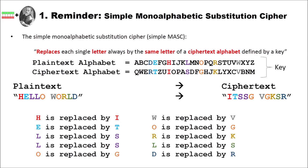What is the simple monoalphabetic substitution cipher? If you are a subscriber of this channel or familiar with cryptology, you probably know this already. But here is a small reminder. The simple monoalphabetic substitution cipher replaces each single letter of our plaintext always by the same letter of a ciphertext alphabet that is defined by a key. Here you can see an example of two alphabets: the plaintext alphabet, which is the standard Latin alphabet with 26 letters, and a ciphertext alphabet used to substitute letters.